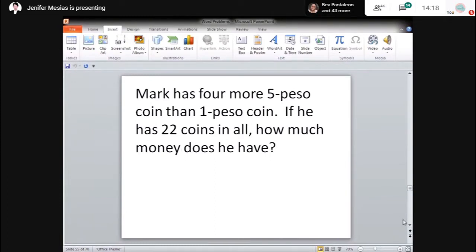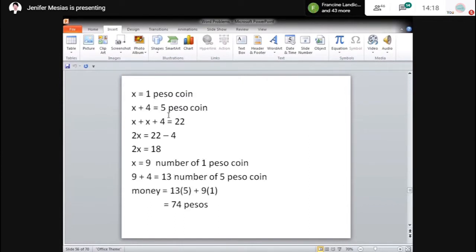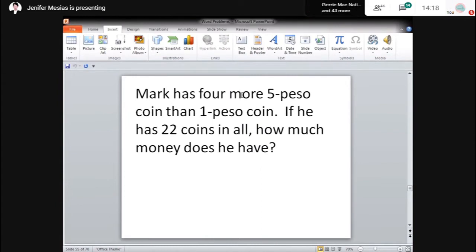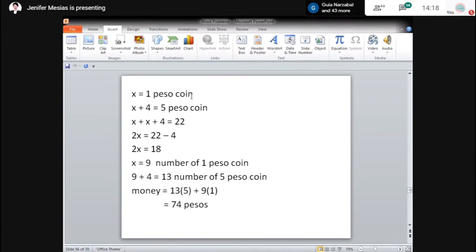So, as we analyze the given problem, ang sabi diyan, si Mark daw meron siyang 5 peso coin and 1 peso coin. Then, yung 5 peso, 4 more than 1 peso. So, then, kapag tinotal mo lahat, yung total value ng pera niya, 22 pesos. First step, ayan, maglilet tayo. Kasi as you observe, dun sa given problem, mas marami yung 5 pesos. So, ngayon, ang ililet natin na X ay yung 1 peso coin.